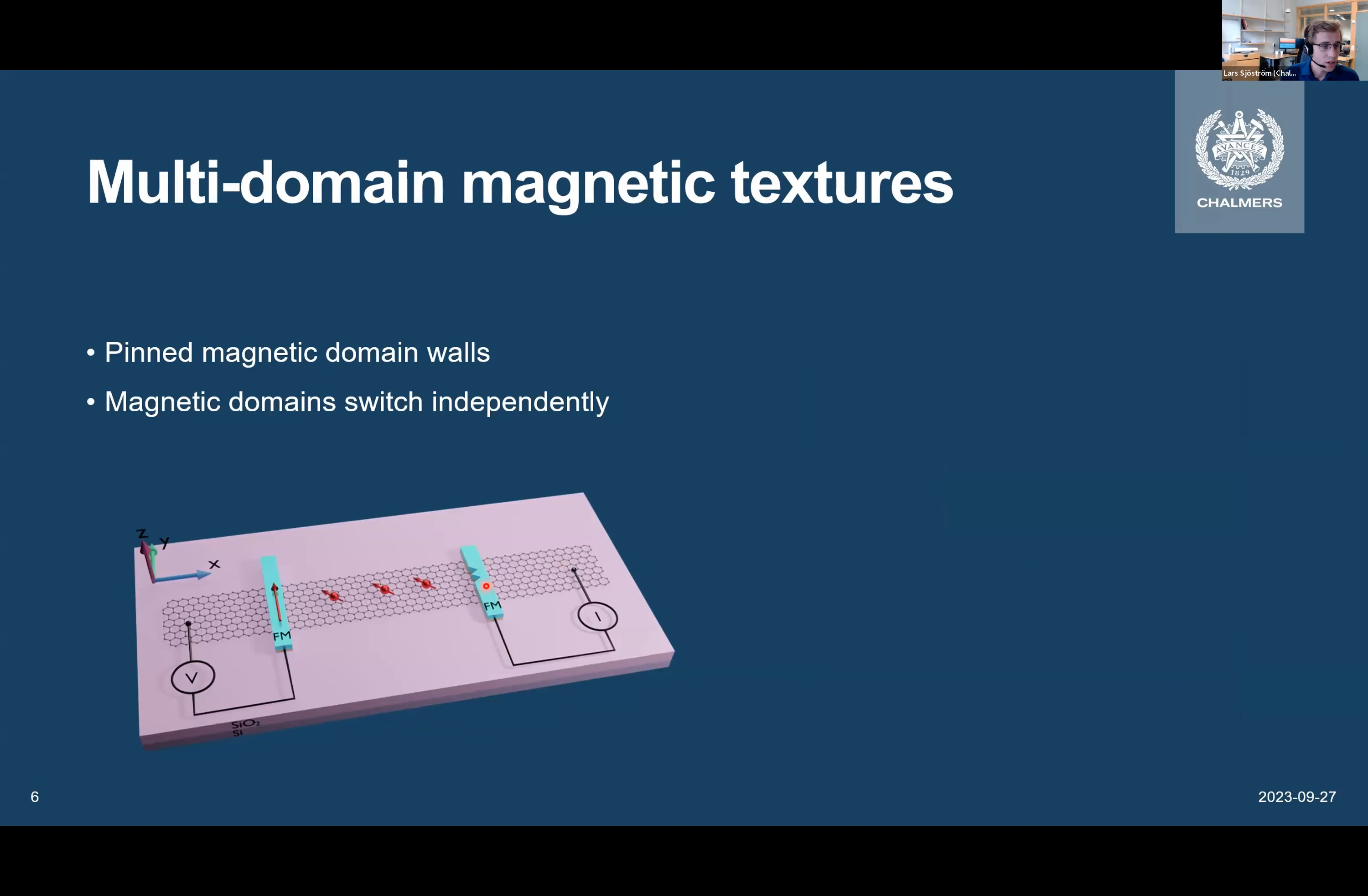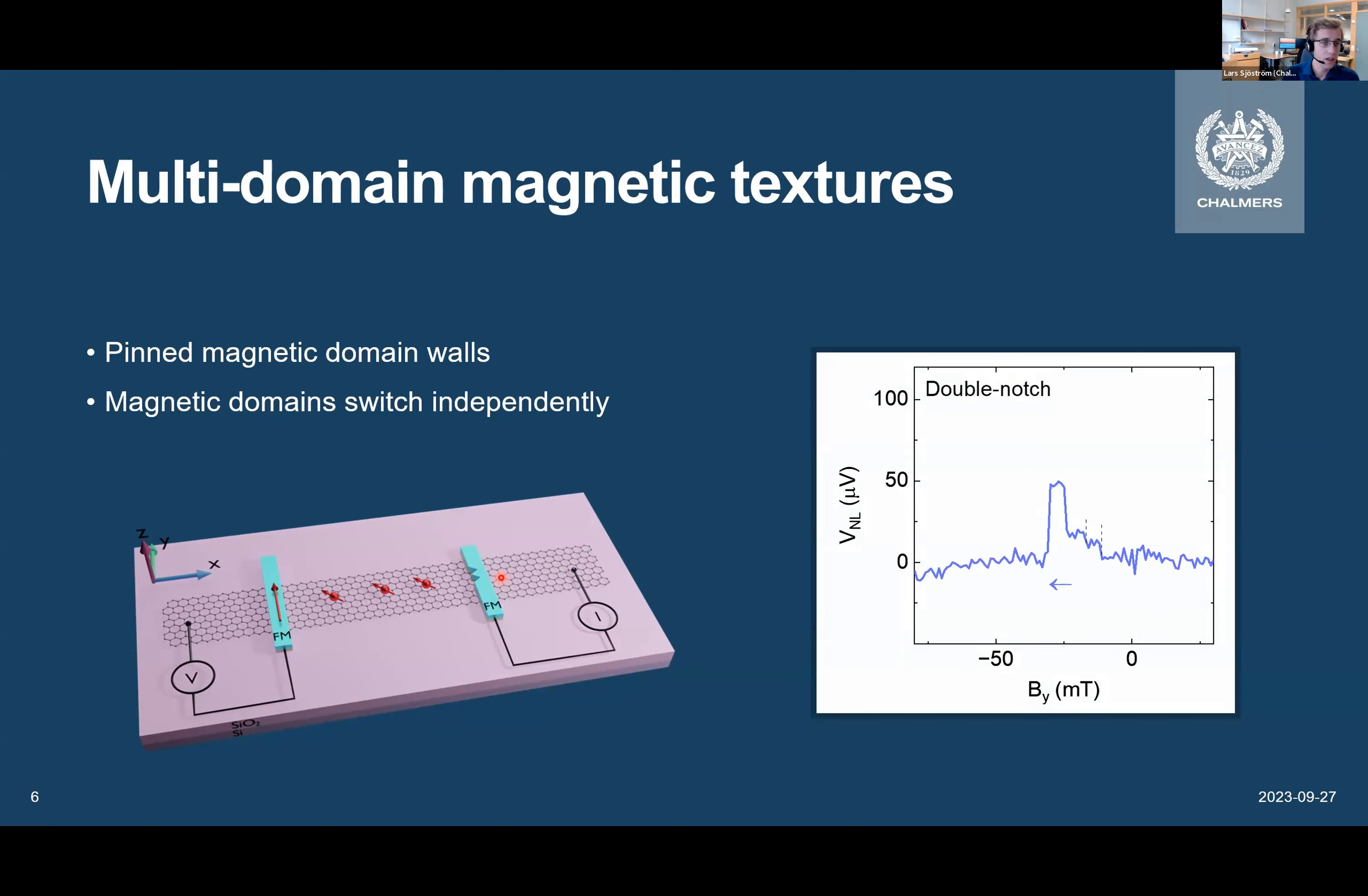If we now put two notches, we should get three different magnetic domains. And we get a very similar behavior. Now, we're switching from positive to negative field, but that's just a sign change. It doesn't change anything other than that. And as you can see, we have now three sharp switches.